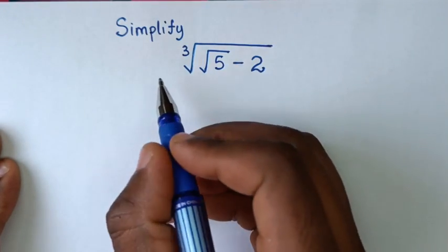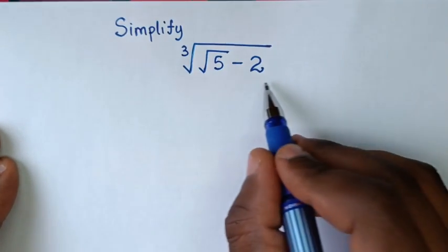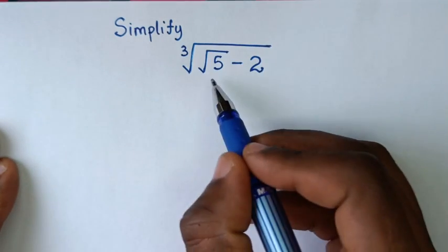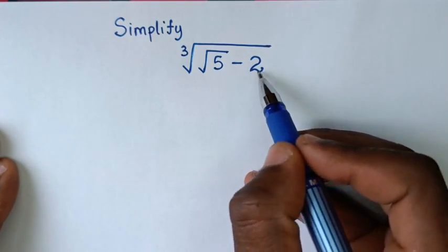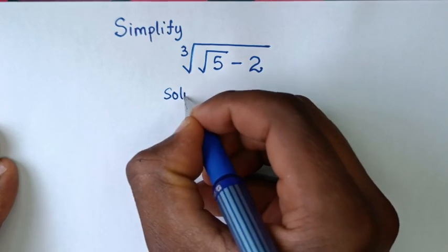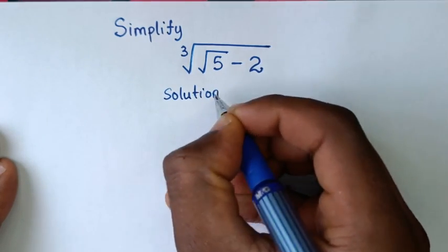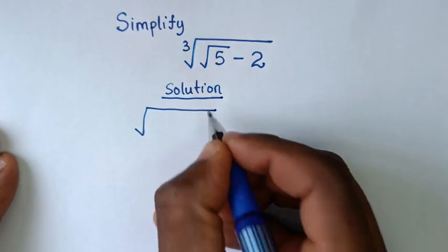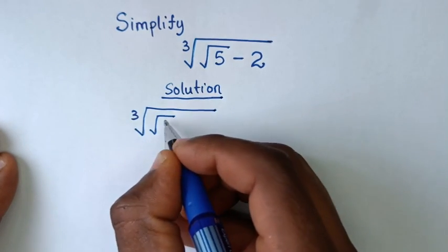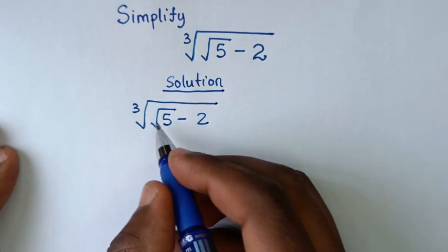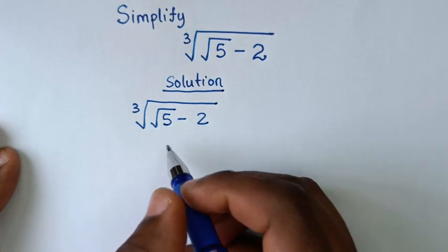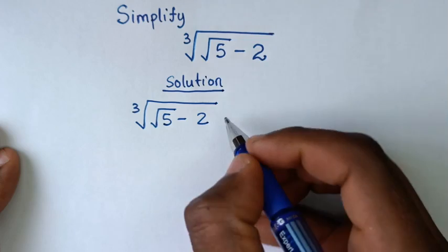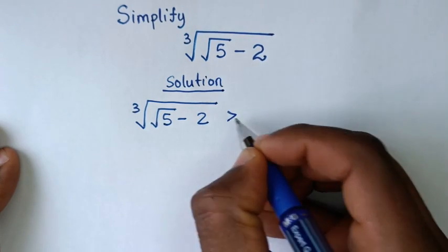Hello, you are welcome to solve this math problem: simplify cube root of square root of 5 minus 2. Solution. From our problem, which is cube root of square root of 5 minus 2, square root of 5 is greater than 2, so the cube root of square root of 5 minus 2 — the domain should be greater than 0.